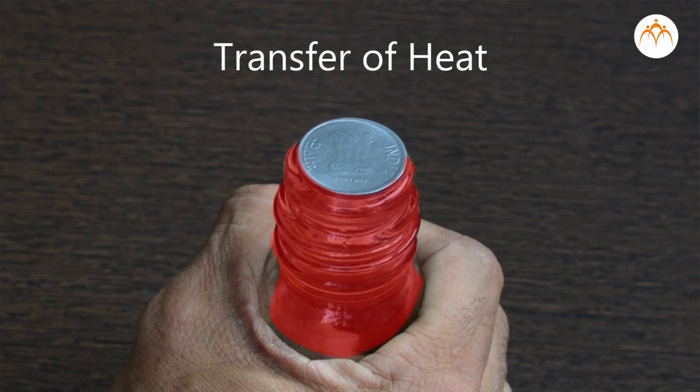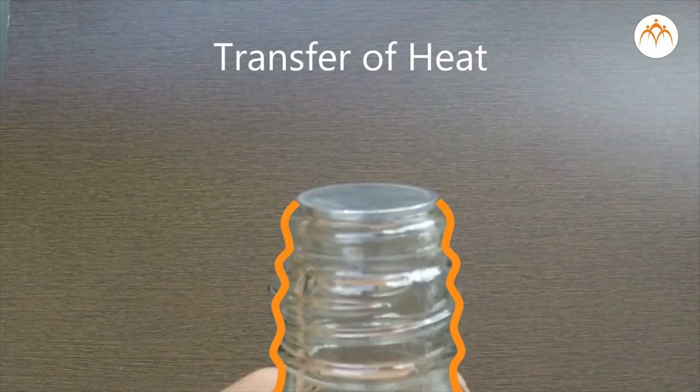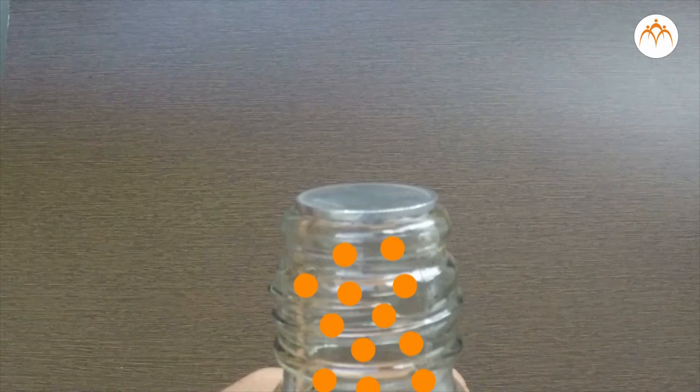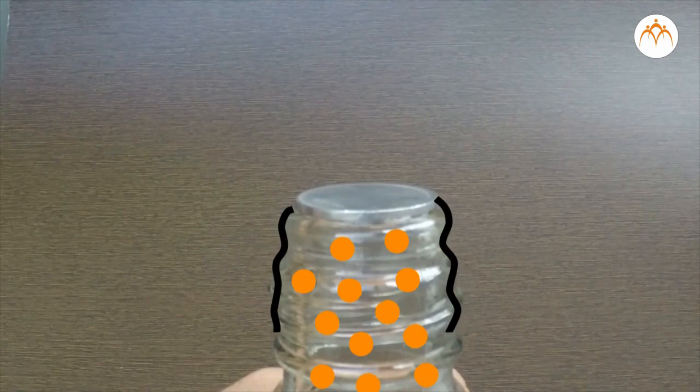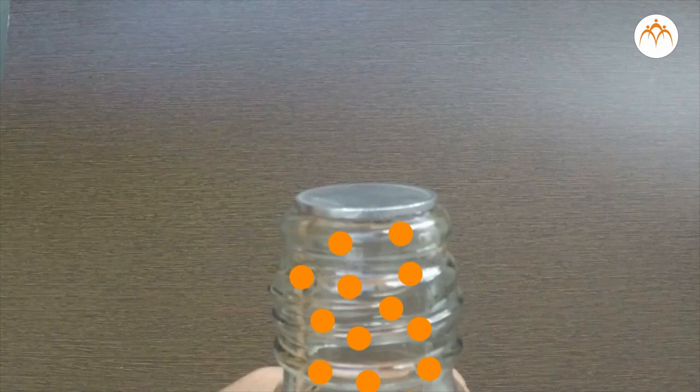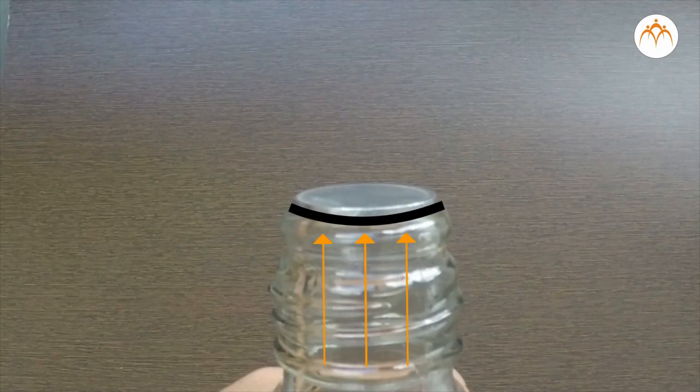Heated glass in turn heats the air inside. Air expands on heating. Glass is rigid and it cannot expand. The only way is to lift the coin and move out.